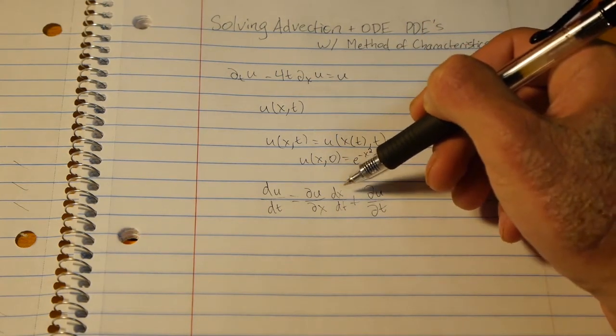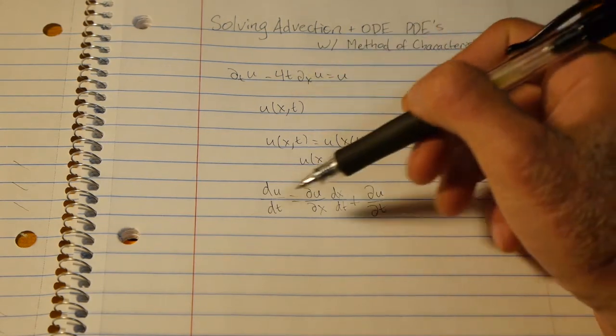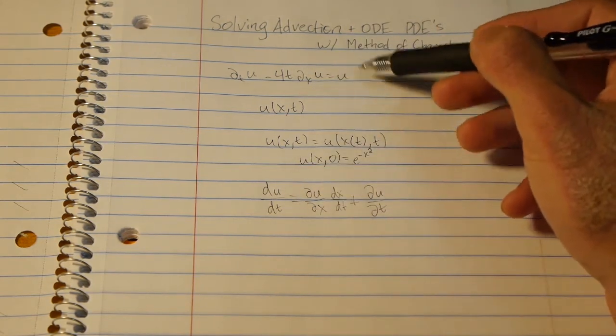So here we see that we have dx/dt that will relate to negative 4t and we have du/dt which will connect with u.